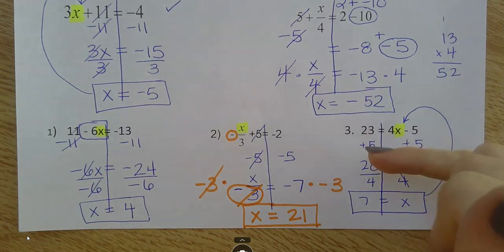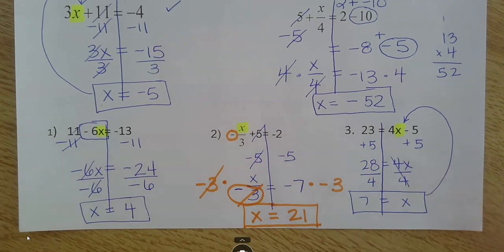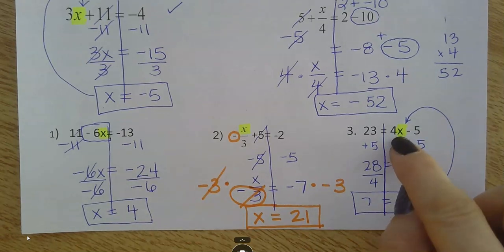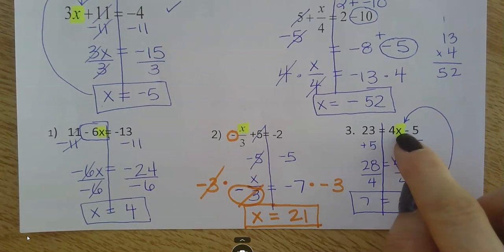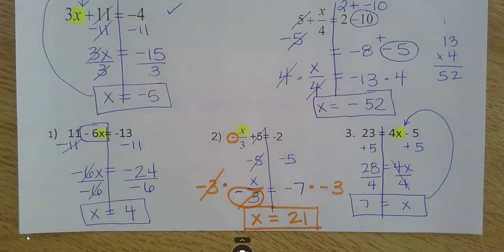So, I did plus 5 on both sides. Then I brought down my 4x and divided by 4 on both sides. And that gave me x is equal to 7. And you're not done until you actually plug that 7 back in. 4 times 7 minus 5 does give you 23. So, we know it works. So, now there are 3 left on the next page.